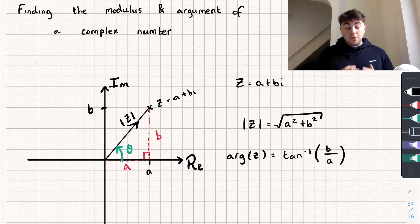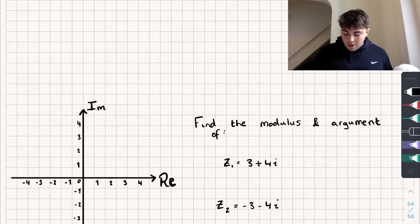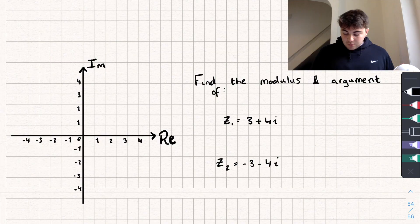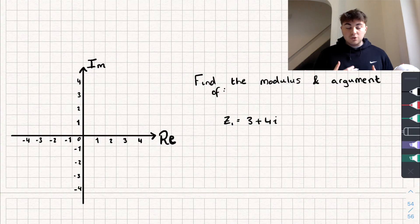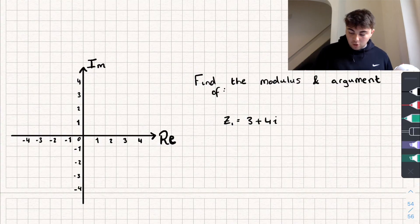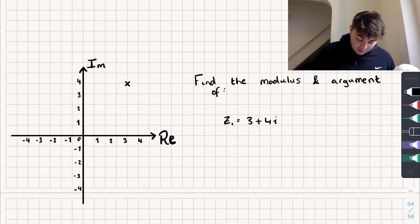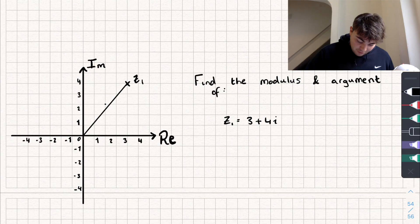Let me show you a couple of examples that will demonstrate this a bit more easily. So the first one — we want to find the modulus and argument of the complex number z1, which equals 3 plus 4i. Let me first mark it onto my Argand diagram. So 3 plus 4i is going to be this number here — that's my z1 — and let me draw it on as a vector.